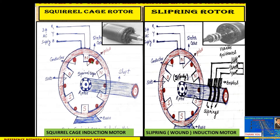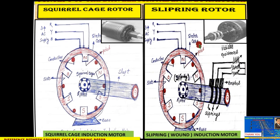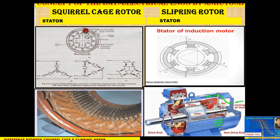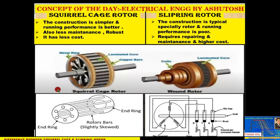The stator structure of any three-phase induction motor is similar to a three-phase synchronous motor. Three-phase supply is provided to the stator armature winding, and there are various slots in the inner periphery of the stator. These windings are connected in either star or delta configuration. Now we will discuss the differences between squirrel cage rotor and slip ring rotor.